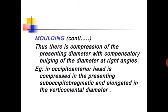Thus there is compression of the presenting diameter with compensatory bulging of the diameter at right angles. For example, in occipito-anterior position, the head is compressed in the presenting sub-occipito-bregmatic diameter and elongated in the vertico-mental diameter.